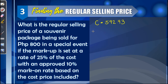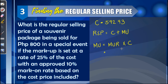To find the regular selling price, it equals the sum of the cost and the markup. We don't know the markup yet, so we solve for it first. Markup equals markup rate times cost: 0.25 times 592.93, which equals 148.23.